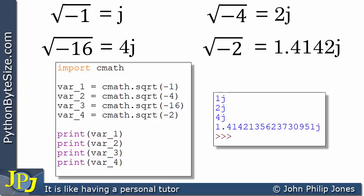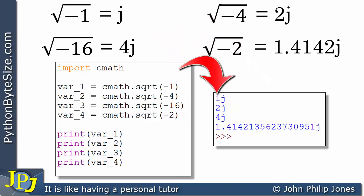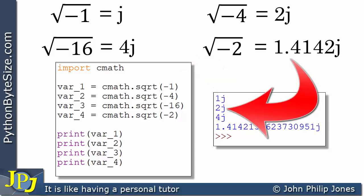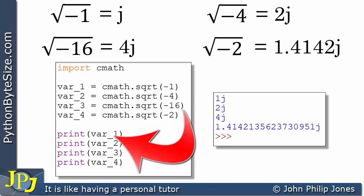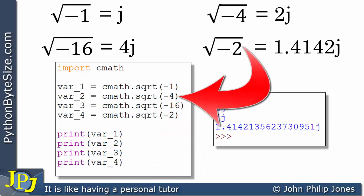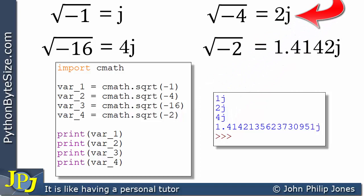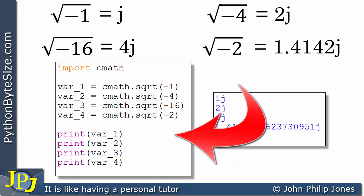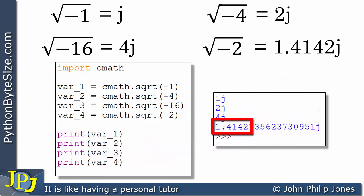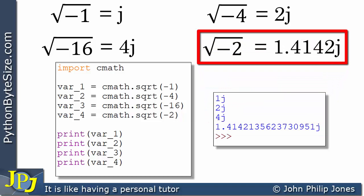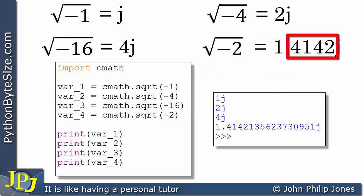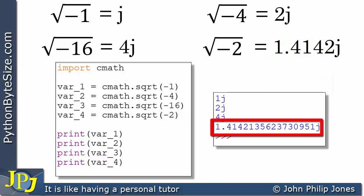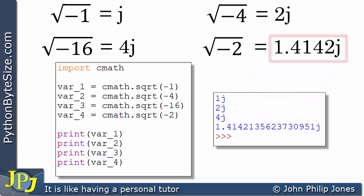If we look at the runtime, when I print var_1 I get 1j — Python will always stick a 1 in front if it's just a j. This is 2j, which is output by this line, and the line responsible is the square root of minus 4. Here we can see that this line is outputting 4j, and this line is outputting 1.4142 followed by more decimal places ending with j. Python's output is a more accurate version, but you can still see that Python had no difficulty finding the square root of minus 2.